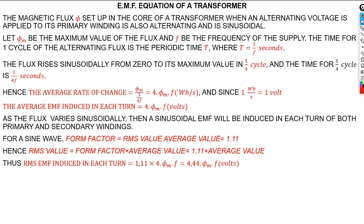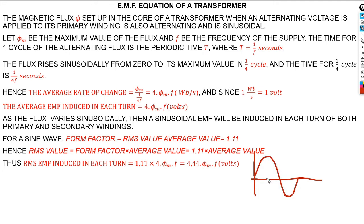Let our flux be the maximum value of the flux and f be the frequency of the supply. The time for one cycle of the alternating flux is the period T. The period is given by one over the frequency. The flux rises sinusoidally from zero to its maximum at one quarter of the cycle, because our AC source is sinusoidal — you can see this as a wave.